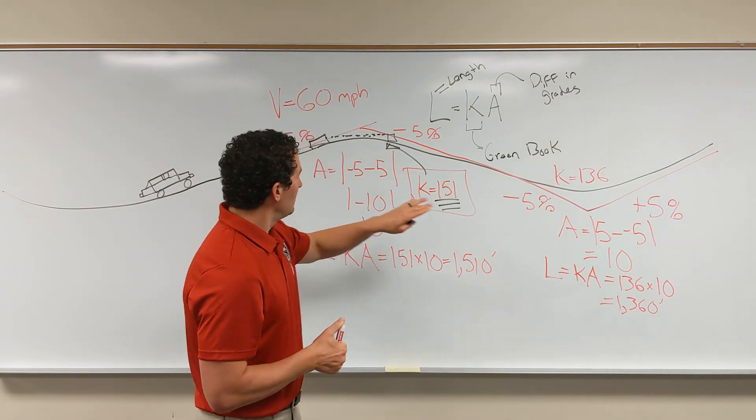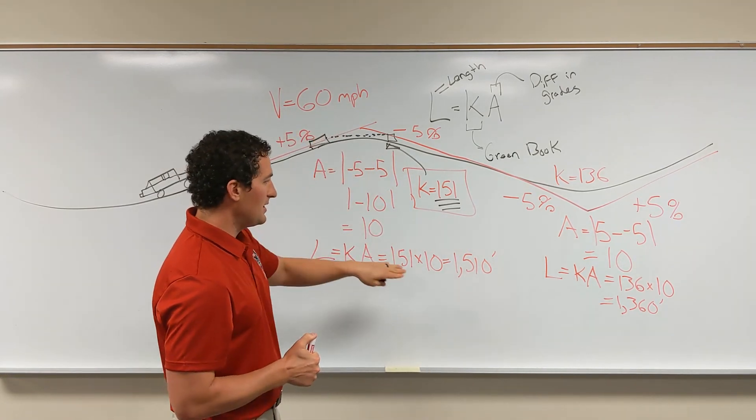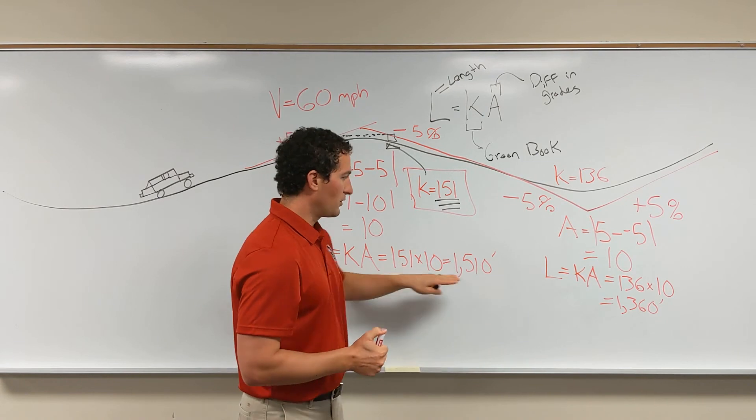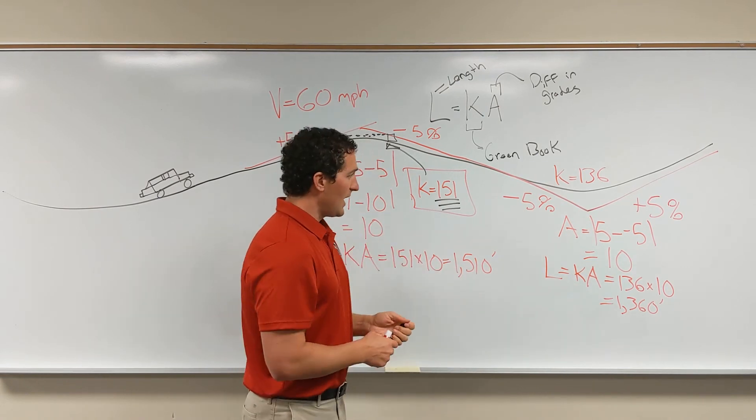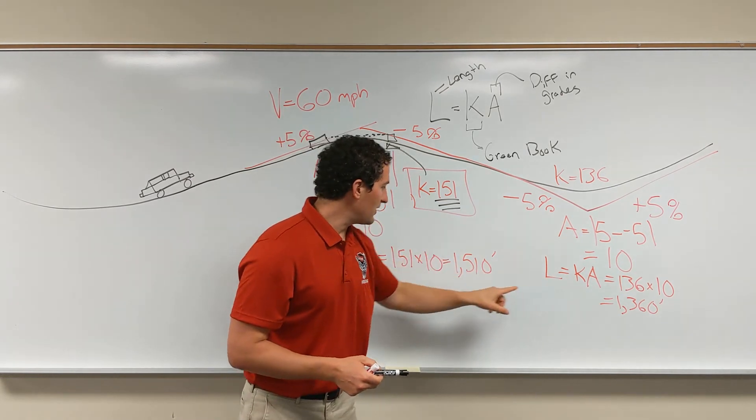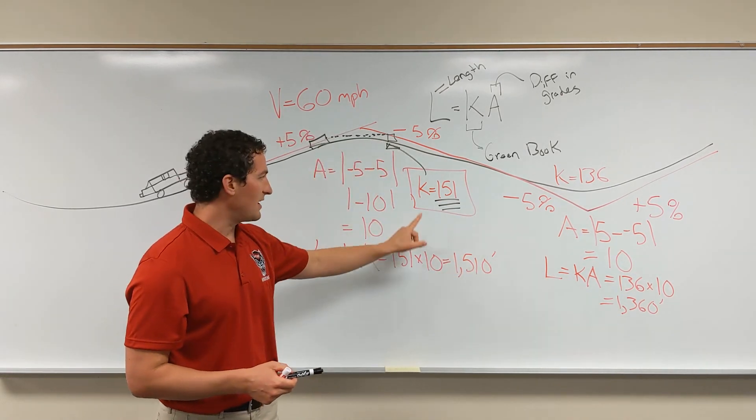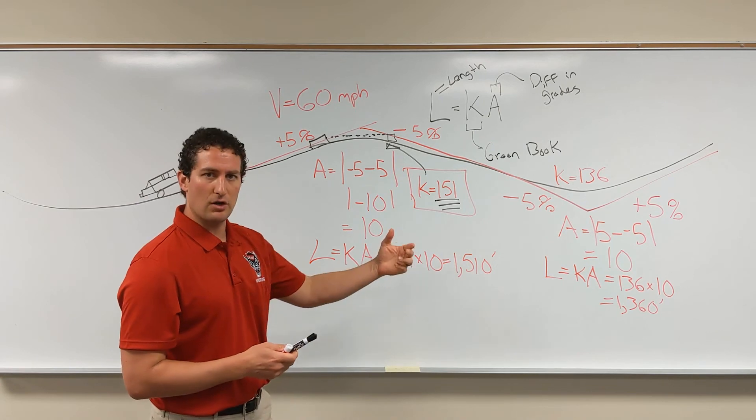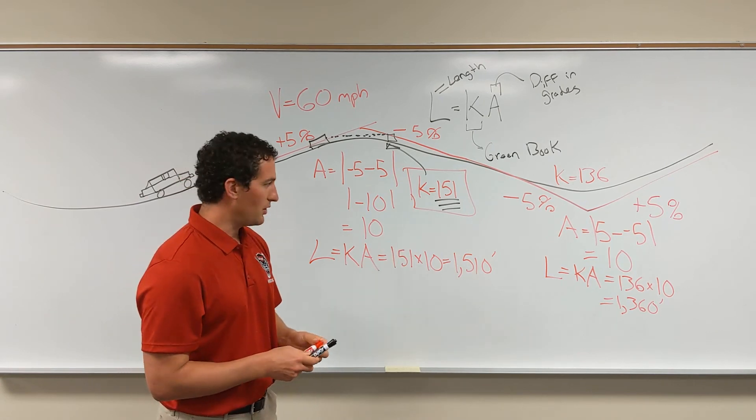These are both the same grades, same design speed, but crest versus sag is what we're dealing with. And the thing we're worried about for stopping sight distance, and both of these are the stopping sight distance K values. Passing sight distance is much larger if we're looking at a two-lane road.